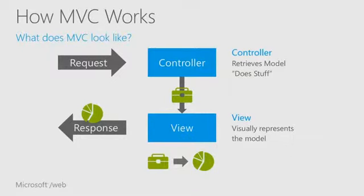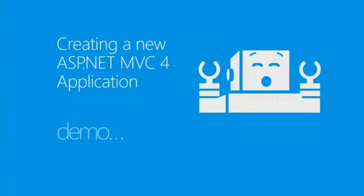I'll answer questions and look at people's code and say: step one, get this code out of your view. A lot of times the model is trying to map directly to a database instead of to something the view can easily process. If you've got a lot of logic in your view, you're probably using the wrong kind of model class. When we're done we've got a response sent to the user — most of the time it's going to be HTML.